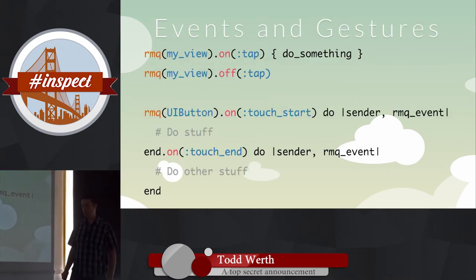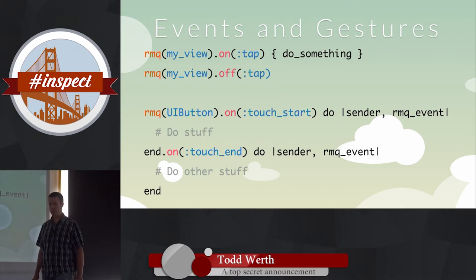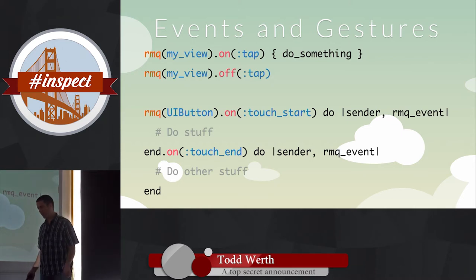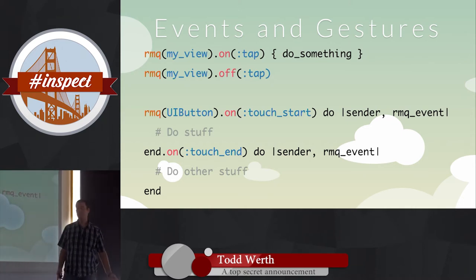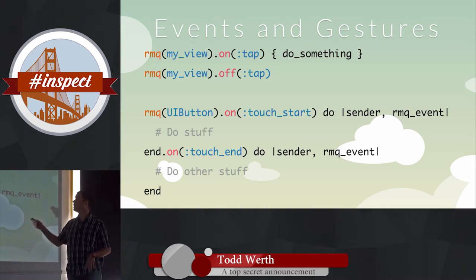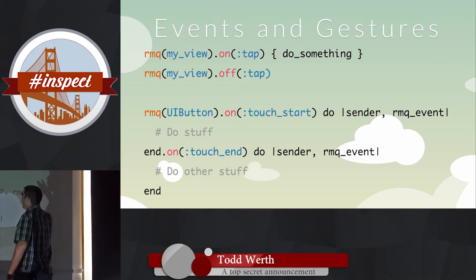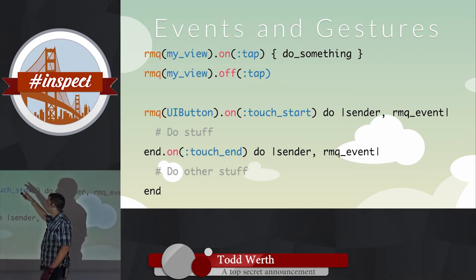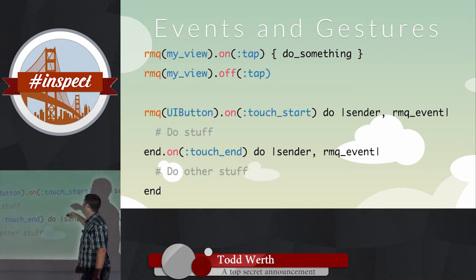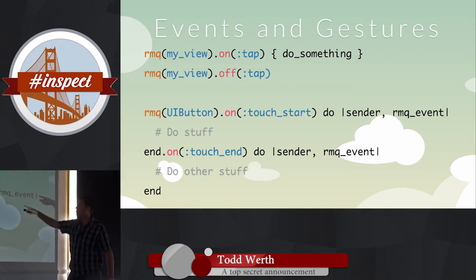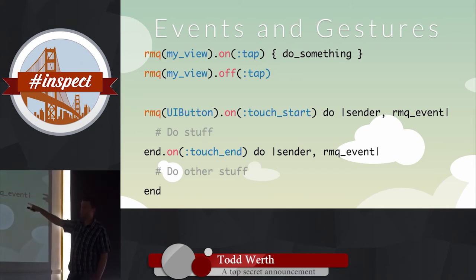Events and gestures: in iOS dev, gestures and events are two separate things even though they work the same way. RMQ normalizes that into one thing. The top example is a gesture — on tap, you pass it a block and do something. Then 'off' removes the gesture, the same as jQuery's touch start and touch end, but done in exactly the same way.